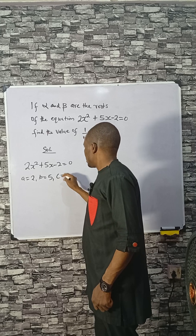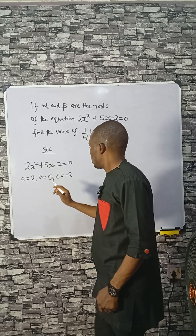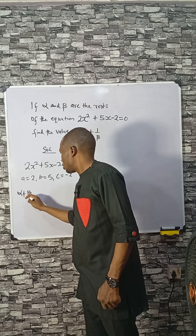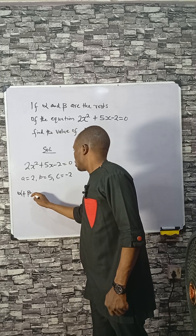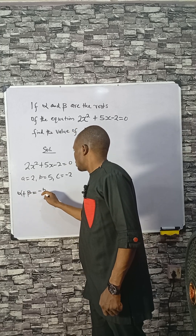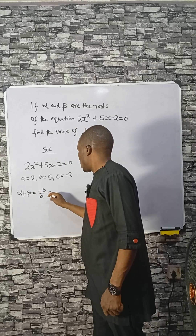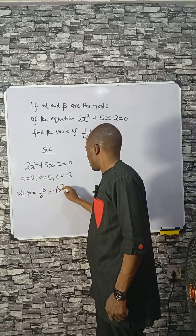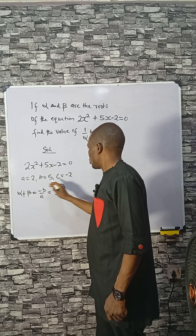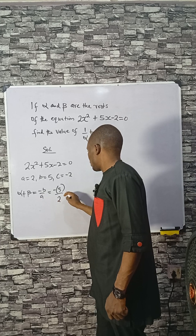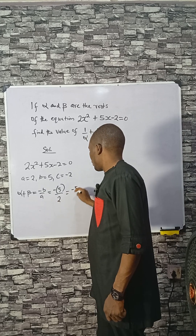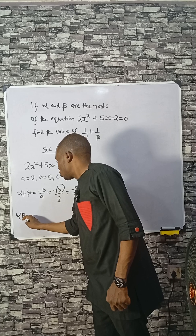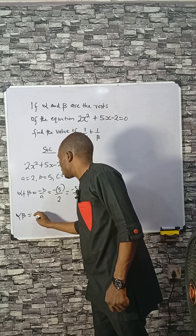And c is minus 2. The sum of roots, which is alpha plus beta — that's when you add the roots — is given as minus b over a. That is minus 5 over 2, where a is 2.